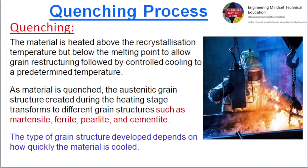the austenitic grain structure created during the heating stage transforms to different grain structures such as martensite, ferrite, pearlite, and cementite. The type of grain structure developed depends on how quickly the material is cooled.